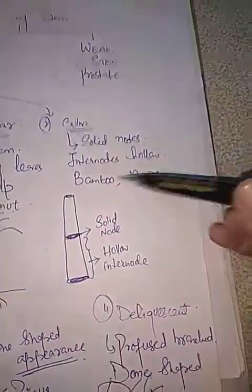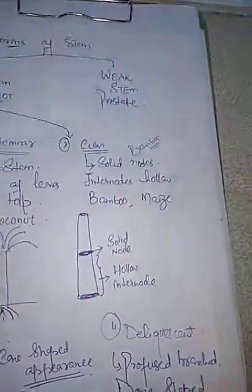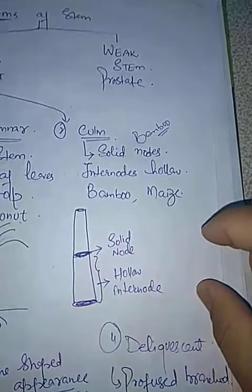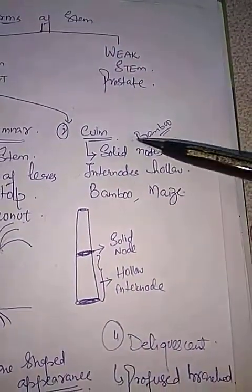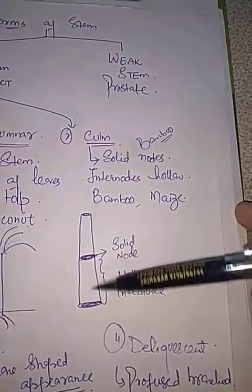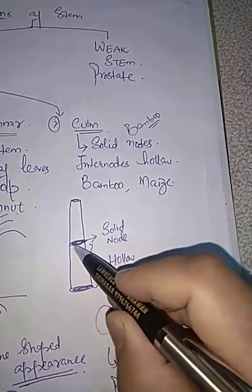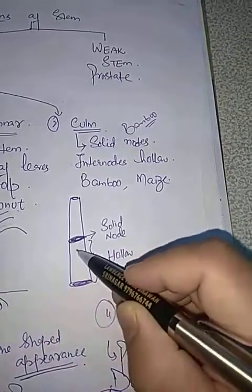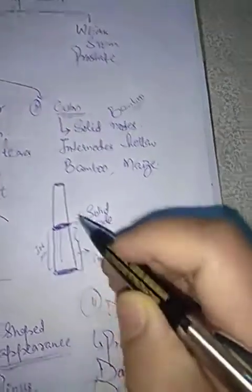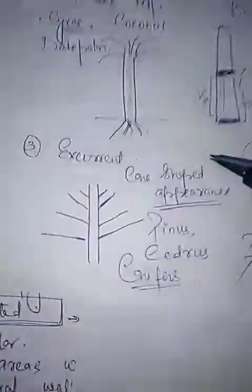The second important type of strong stem is called culm, commonly known as bamboo stem. Culm is a stem in which the nodes are solid but the internodes are hollow. You can observe this in bamboo — the nodes are solid while the internode, abbreviated IN, is hollow. Similarly, maize stem is also an example of culm.